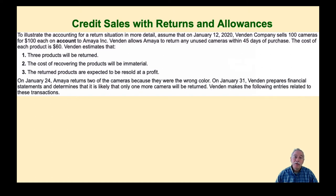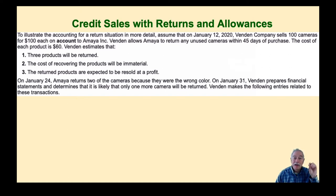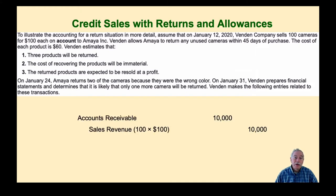The cost of recovering the products will be immaterial, and the returned products are expected to be resold at a profit — this avoids writing down the value of the inventory once returned. On January 24th, Amea returns two cameras because they were the wrong color. On January 31st, Vendin prepares financial statements. The first entry records the sale by debiting accounts receivable and crediting sales for 100 units times $100.